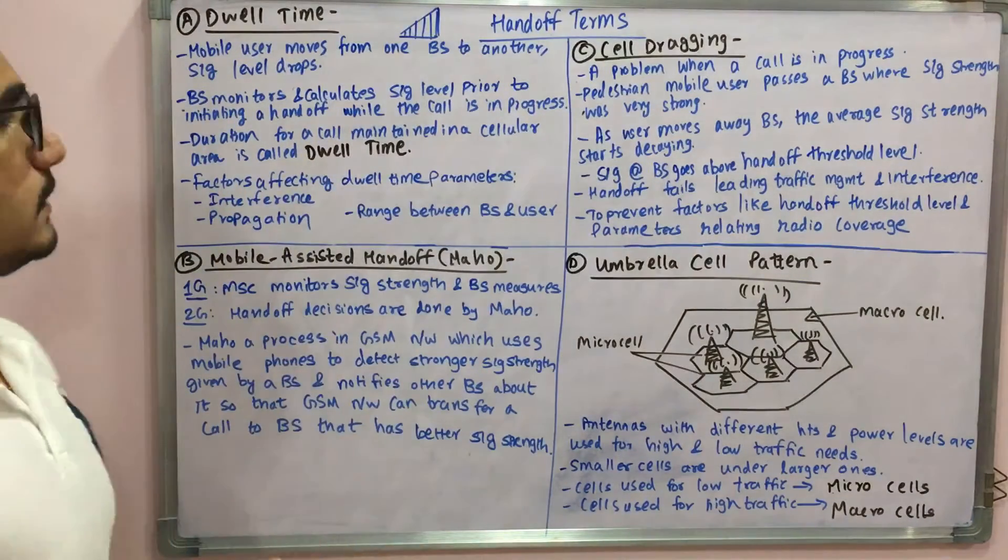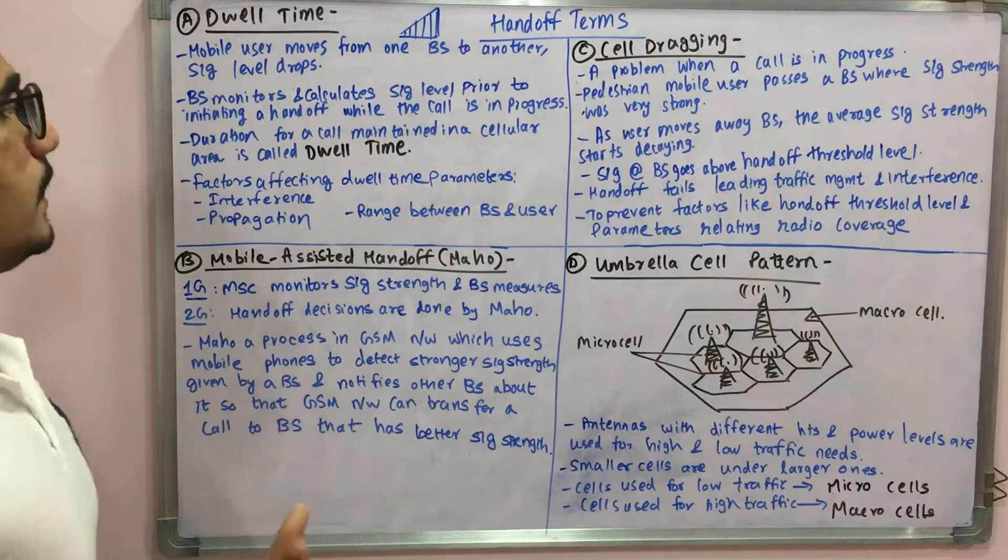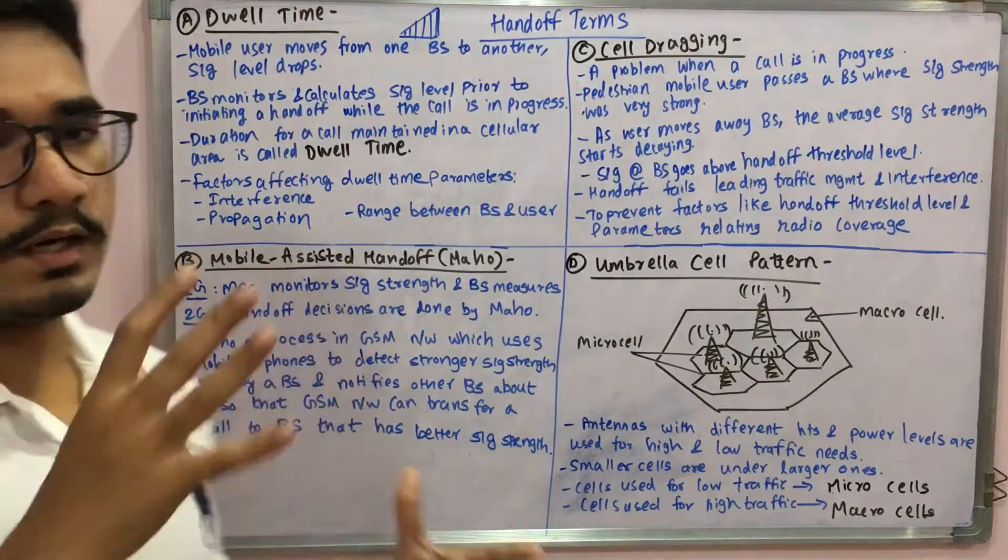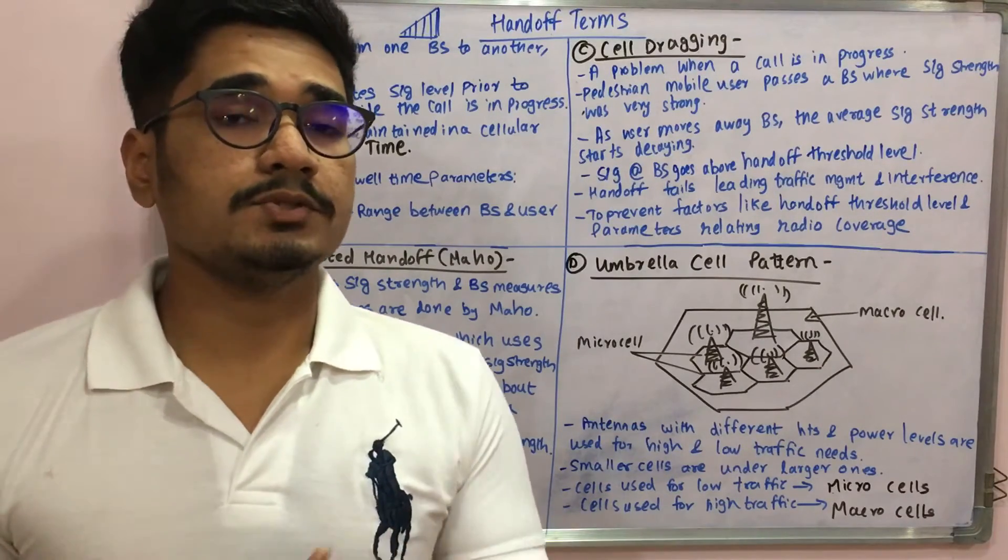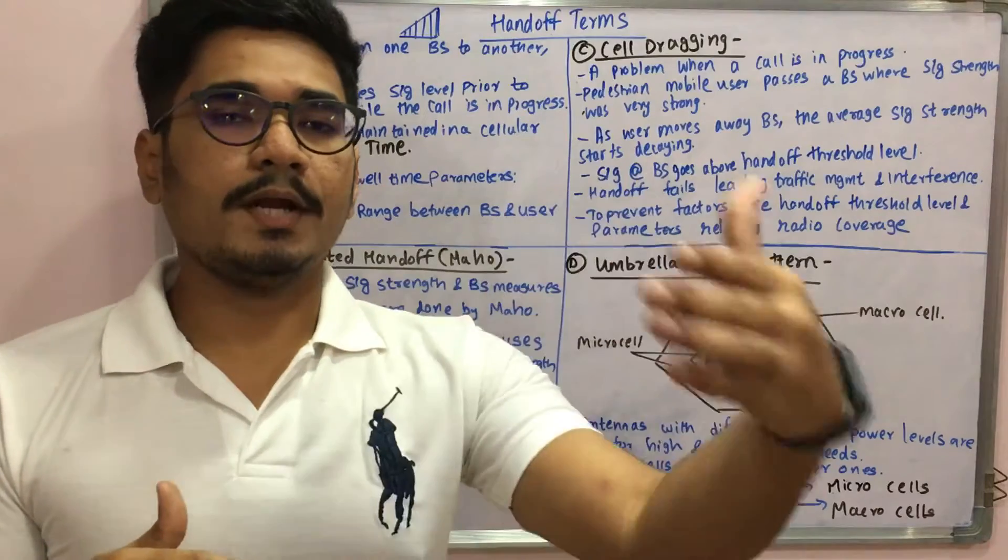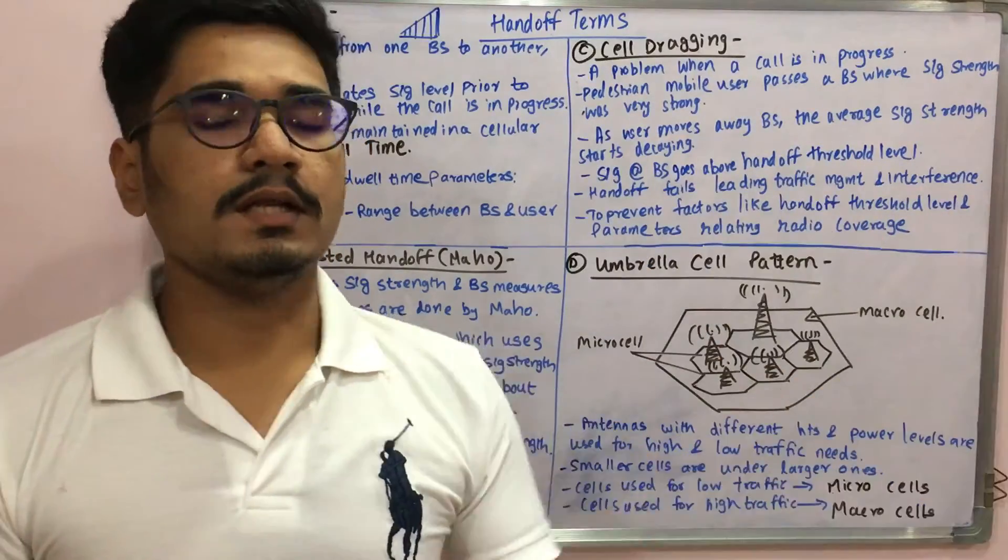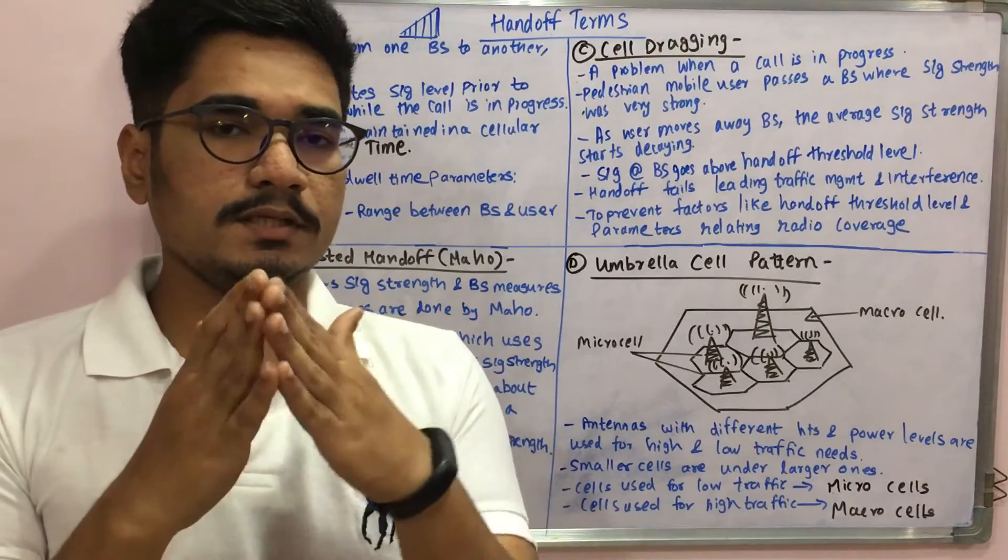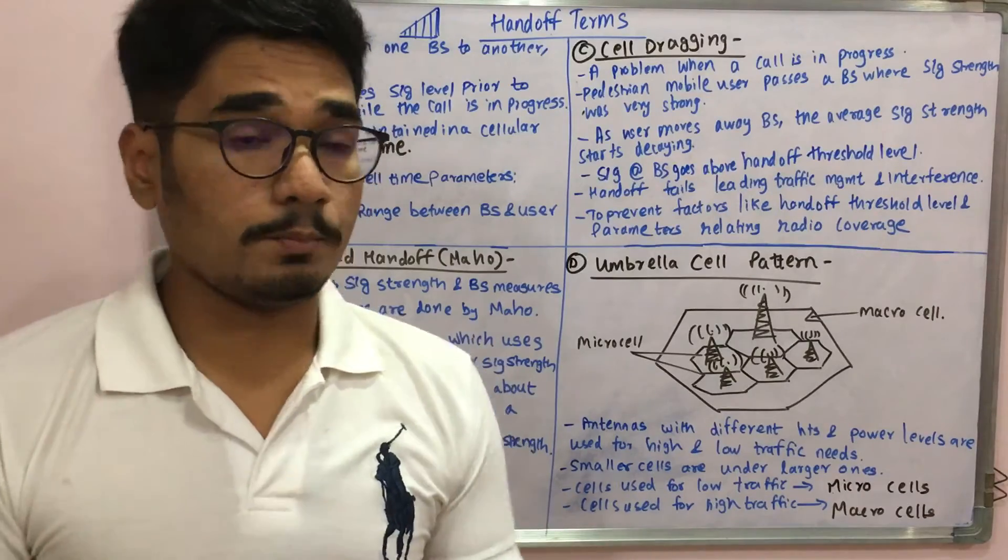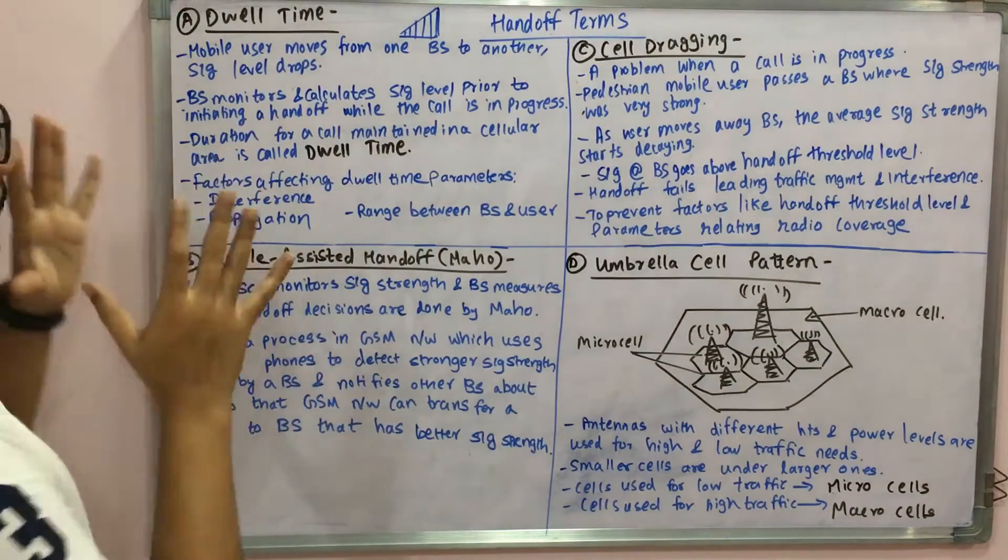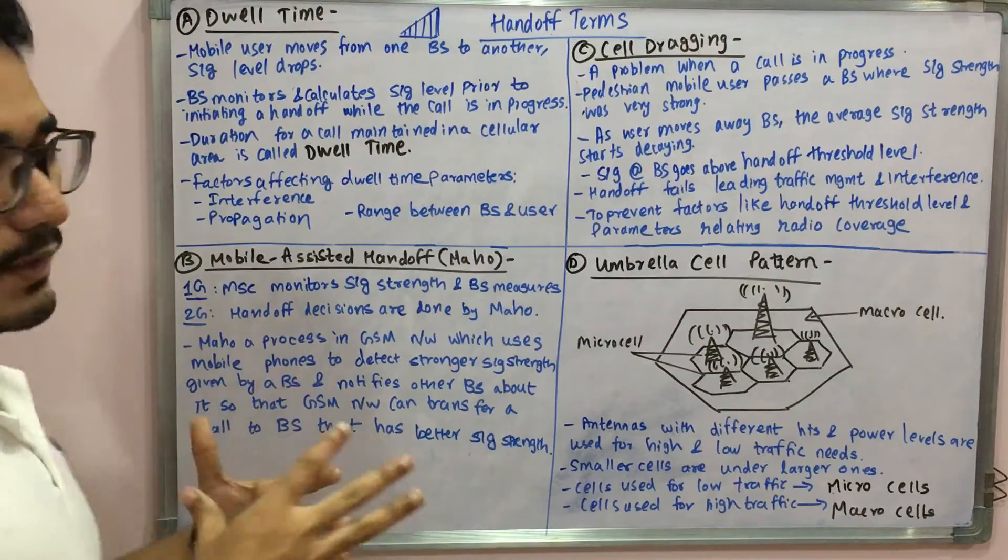The base station calculates and monitors the signal level prior to initiating any handoff while the call is in progress. It's very important - the base station always ensures that it monitors and checks whether the signal strength or the health of that network is proper before handing it over to another base station in the next cell. The duration for which a call is maintained in that particular cellular area is called the dwell time.